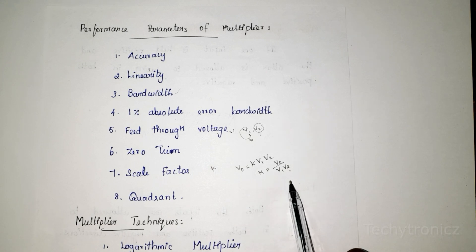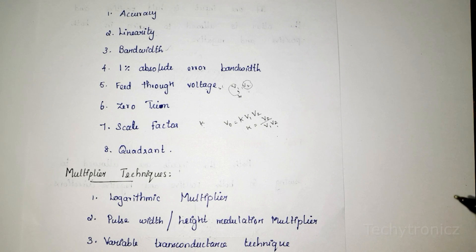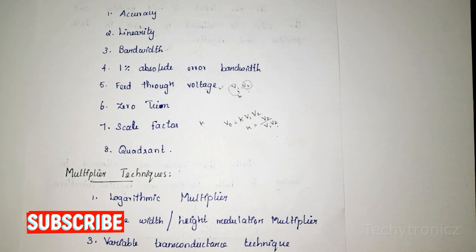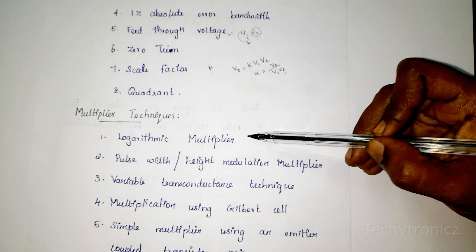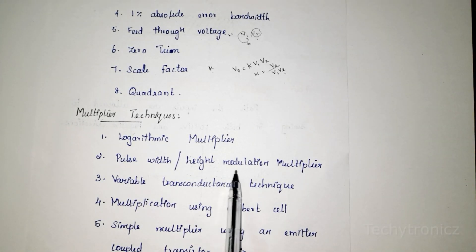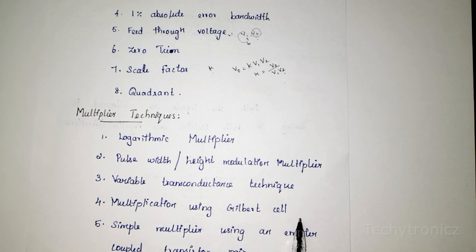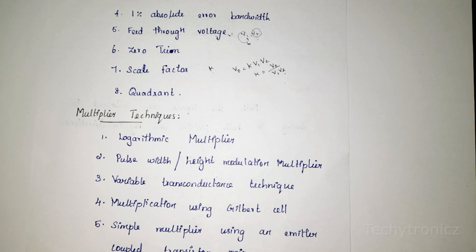The quadrant parameter indicates the restriction on the polarity of the two input voltages, as already discussed in the modes of operation. Various techniques used for multipliers include: logarithmic multiplier, pulse width or height modulation multiplier, variable transconductance technique, multiplication using Gilbert cell, and simple multiplier using an emitter coupled transistor pair. I hope all of you understand the analog multiplier. Thank you.